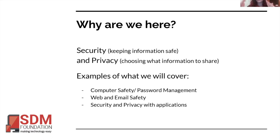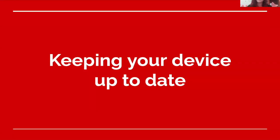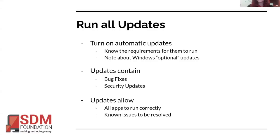We're going to go through examples of security and privacy through many facets of how you interact with devices on the internet. The first and most golden rule, which might not be the most convenient, is you want to keep your device up to date. Updates contain bug fixes — if there are problems with functionality, software gets updated to fix those. But more importantly, they contain security updates.